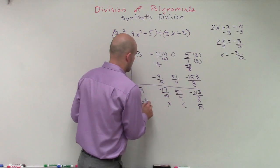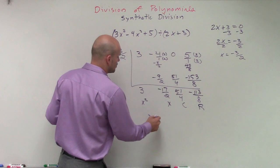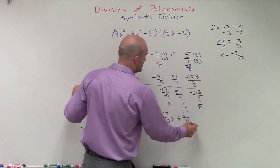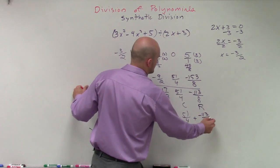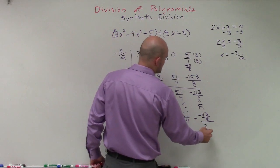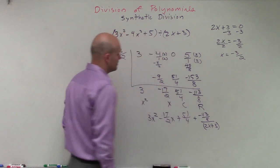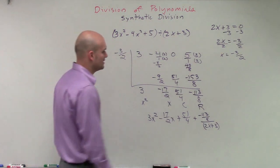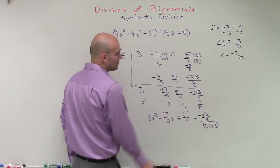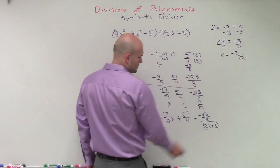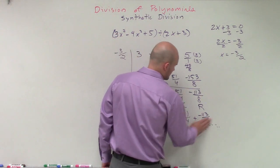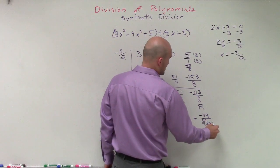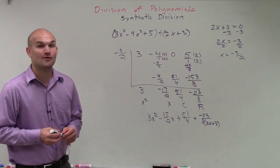The labels going back are: remainder, constant, linear, quadratic. So the final quotient is 3x squared minus 17 halves x plus 51 over 4, plus negative 113 over 8 divided by 2x plus 3. There are a couple of ways to rewrite that — we could take our divisor and rewrite it, or multiply by the reciprocal, so that it's only one fraction times 2x plus 3. And that is how we solve one of those problems.